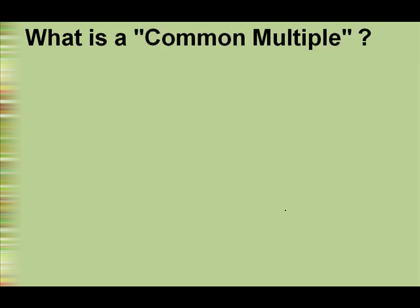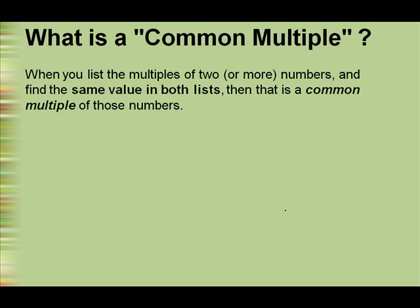What is a common multiple? When you list the multiples of 2 or more numbers and find the same value in both lists, then that is a common multiple of those numbers.